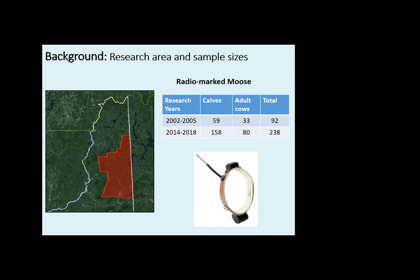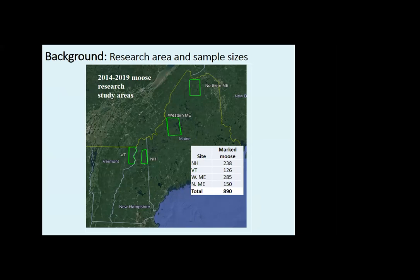That 2014 to 2018 effort really blossomed. Maine ended up developing two study areas after New Hampshire started that 2014 research, and later Vermont also started up a study area. The total number of radio-marked moose is now well over 900 — a tremendous amount of information. It costs just about $2,000 an animal just to get the collars on them, but without question the best way to understand what's going on with this population is to go right to the animal.